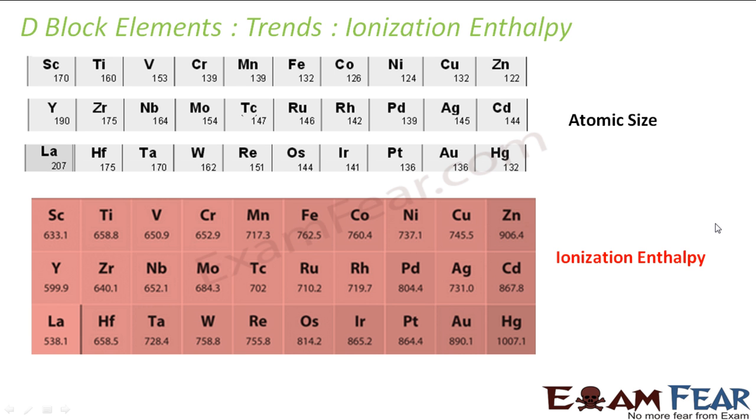Let's talk about the trend in the ionization enthalpy. See ionization enthalpy actually typically depends on the atomic size. So it is inversely proportional to atomic size. Smaller is the size. Higher is the ionization enthalpy. Because smaller is the size. It is difficult to pluck electron.